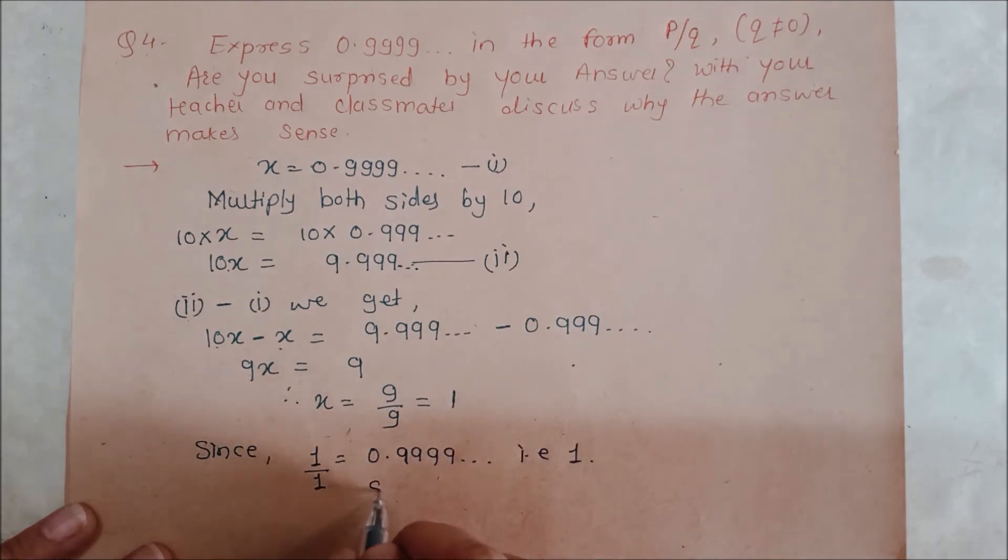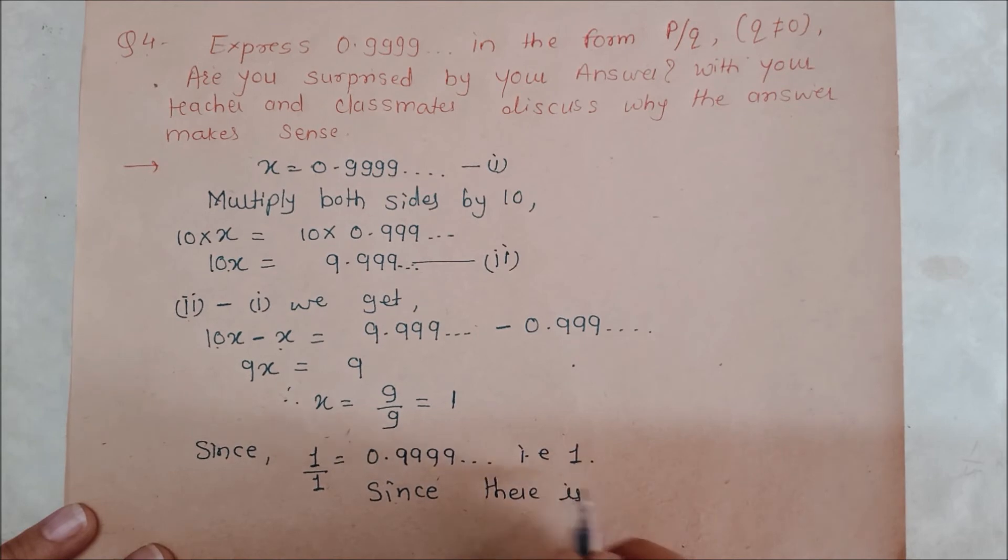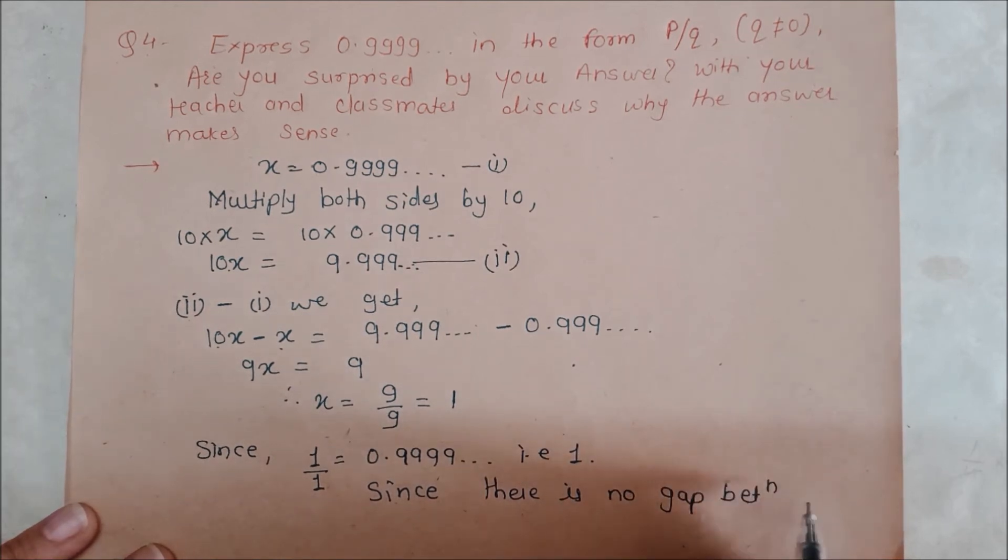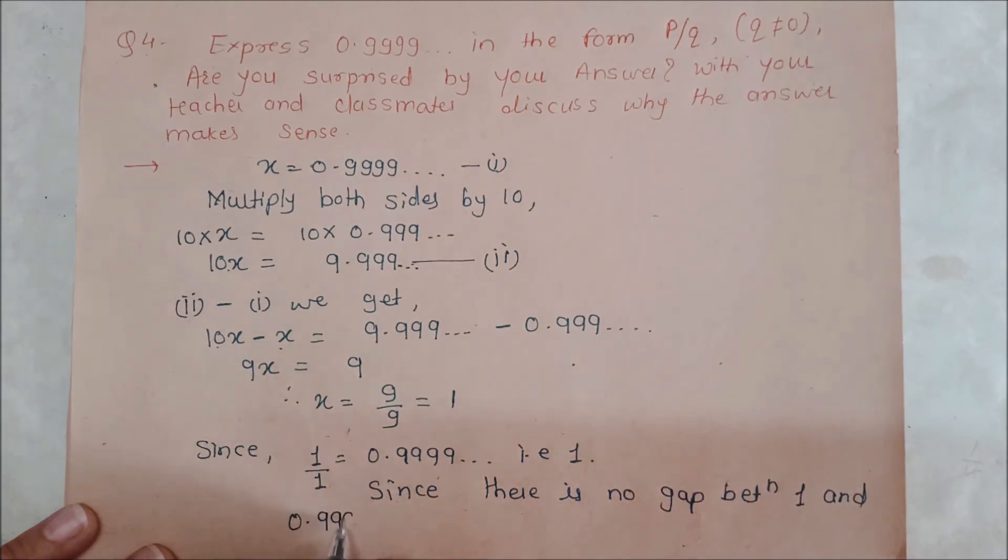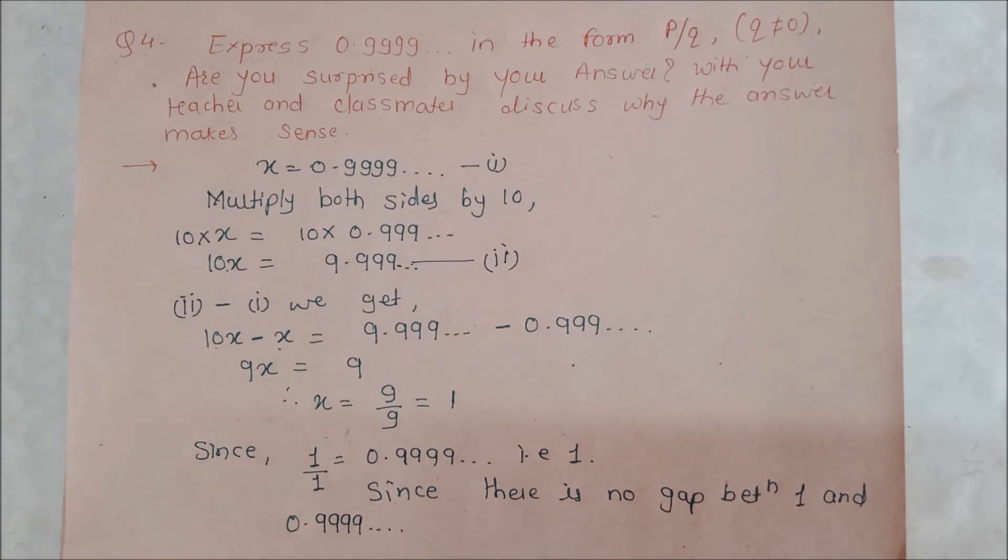Since there is no gap between 1 and 0.9999 dot dot dot, there is no number in between them. Therefore if you write 1 by 1, that will also work and that is also 0.999...